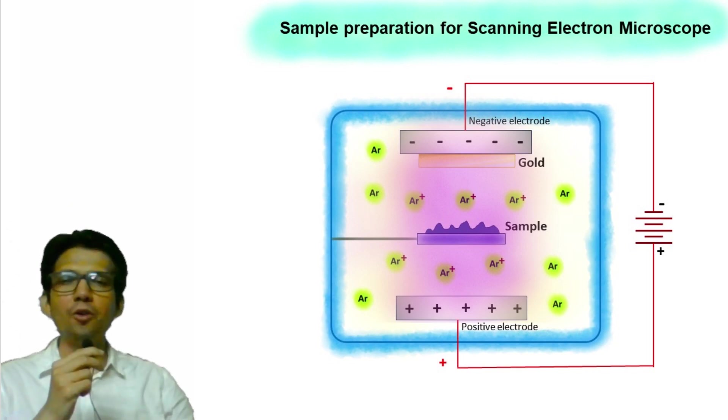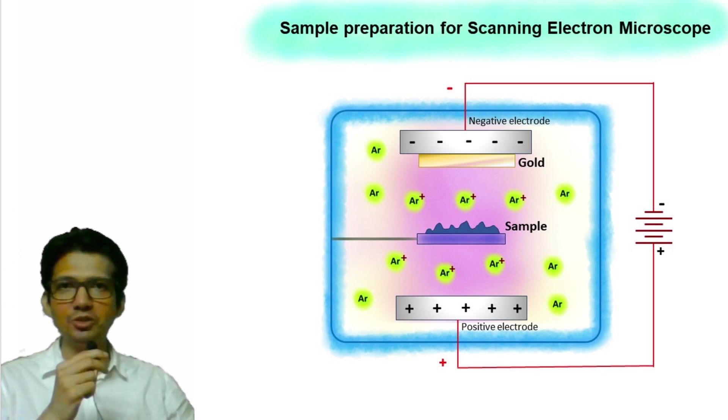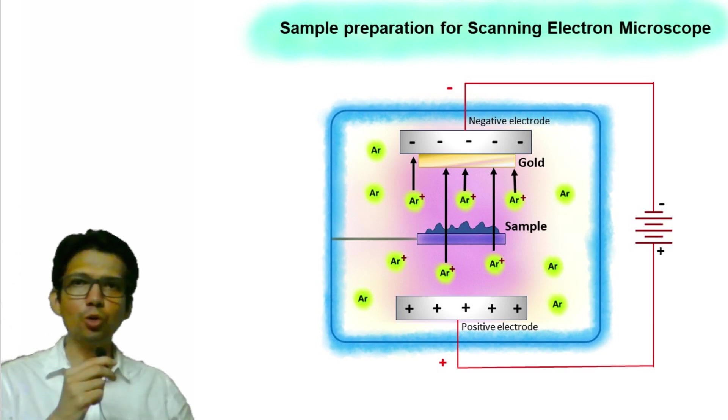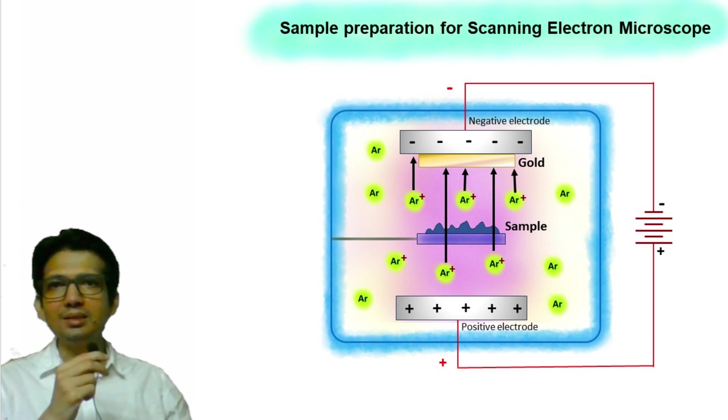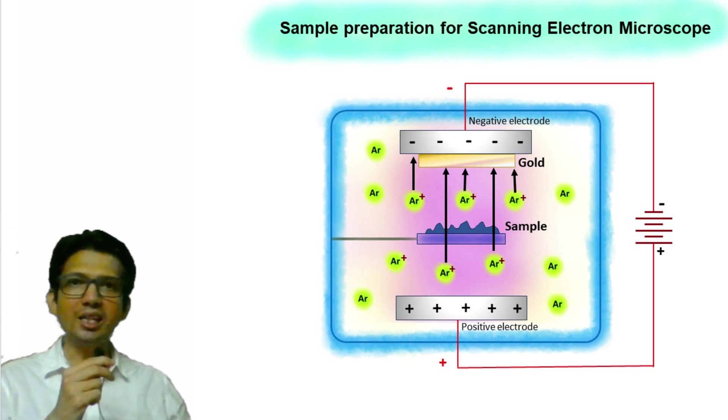These argon ions form a plasma inside the chamber. Since argon ions are positively charged, they are attracted by the negatively charged electrode. Since the applied voltage is very high, these ions are accelerated towards the negative electrode.